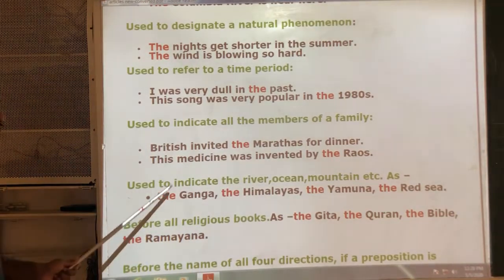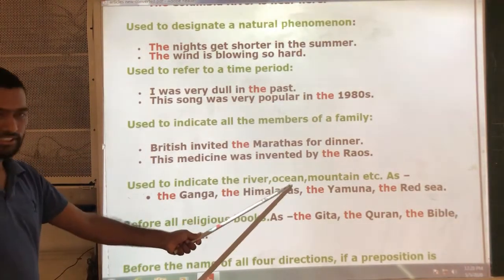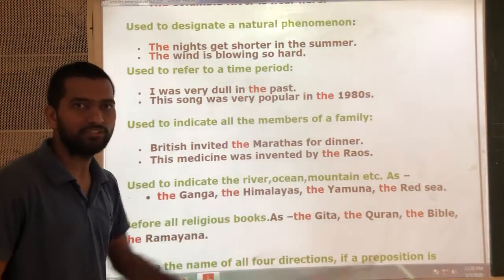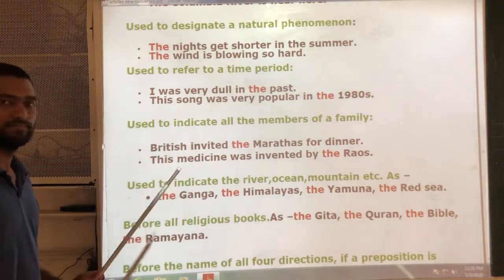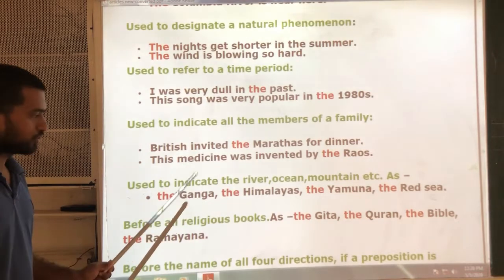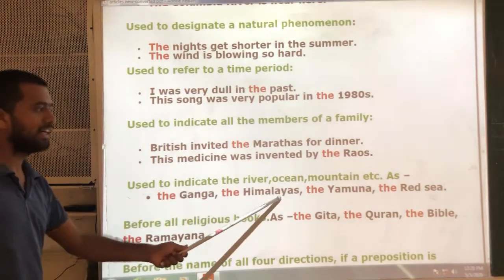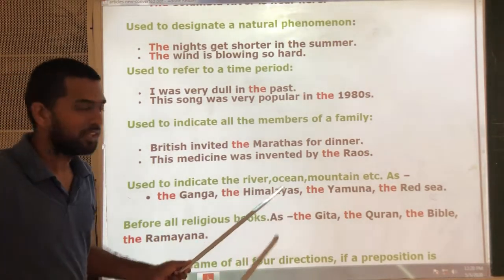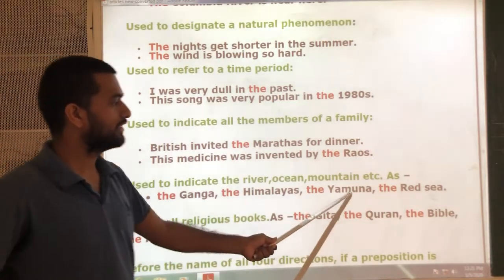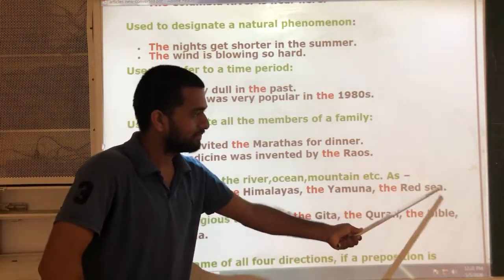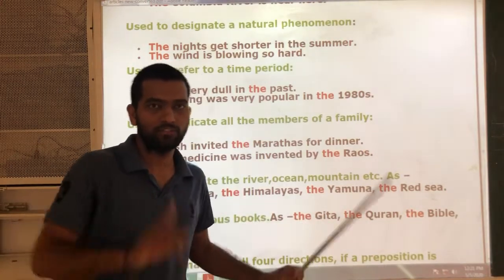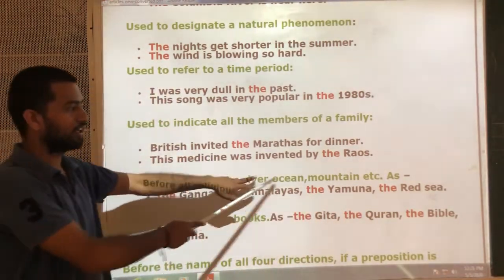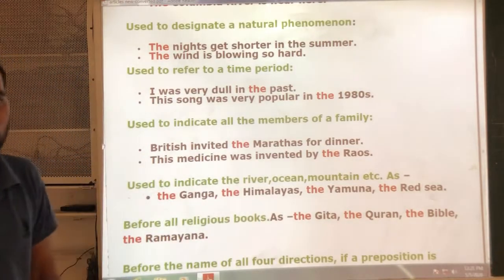Next rule: use 'the' to indicate rivers, oceans, mountains, etc. Before these geographical features, we use 'the'. For example: 'the Ganga' — it is a river, so 'the' is used. 'The Himalayas' — it is a unique thing; there is only one Himalayas in our world, so 'the' is used. Before these types of unique geographical things like rivers, oceans, and mountains, we use the definite article 'the'.